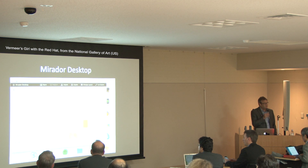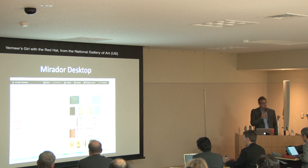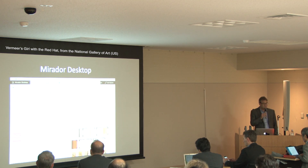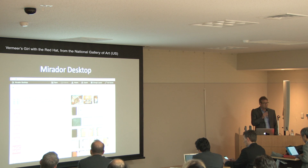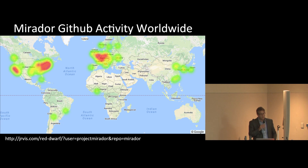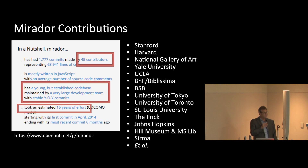There is also a desktop version of Mirador you can download to your local machine to try all features with local images — though a network connection is needed to compare with web-hosted IIIF images. Mirador is a global project with worldwide participation, adoption, and contribution, including the University of Tokyo. The equivalent of 16 years of effort has been invested in developing Mirador. We are currently in version 2 and planning version 3, which will improve the UI, redesign the technology architecture, and add new customizability and extension features.